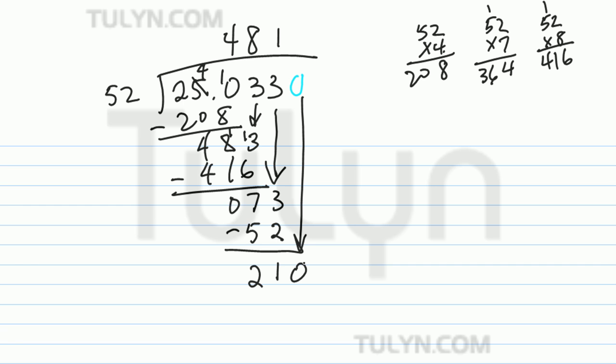Bring it down. 0. 210 divided by 52 goes in 4 times. 210, we'll subtract. 2 times 4.